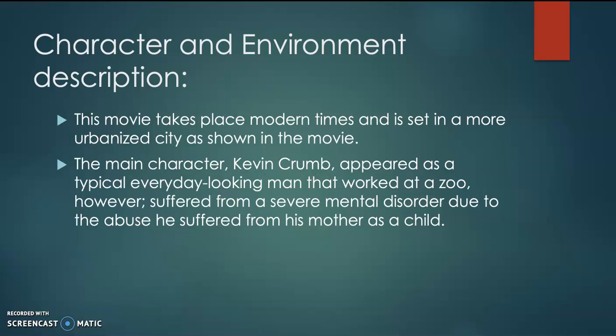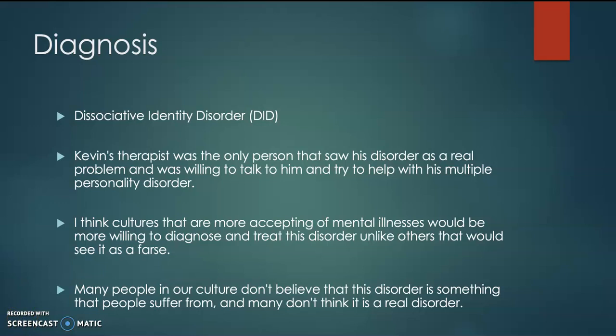The main character, Kevin Crumb, was an everyday-looking guy — seemed pretty normal on the surface. However, he suffered from a severe mental disorder due to the abuse he suffered from his mother as a child. The disorder we diagnosed him with was dissociative identity disorder. This disorder is characterized by some sort of past stress or trauma that someone has experienced, that kind of forced them to create an alternate personality or persona in order to cope with that trauma or stress. In this case, it was Kevin's trauma with his mother when he was a kid.